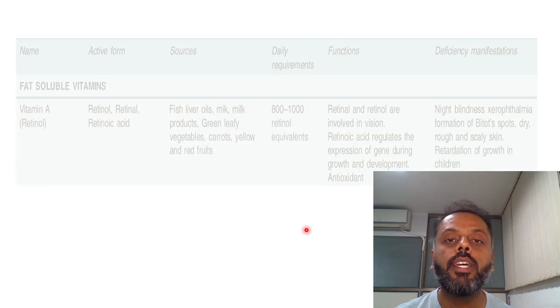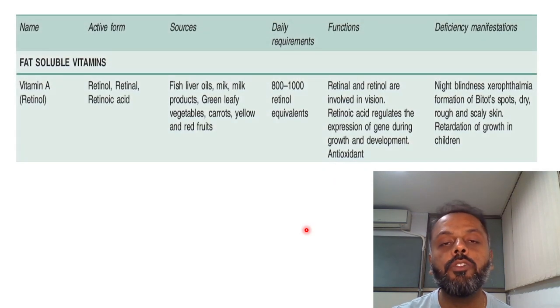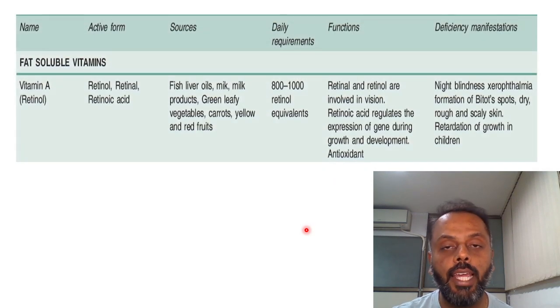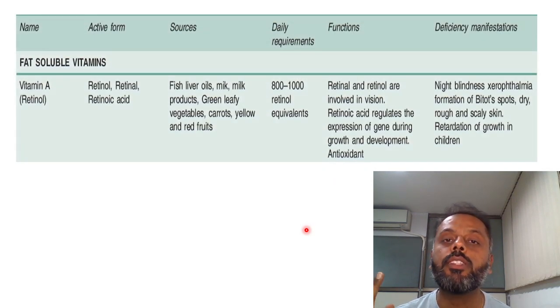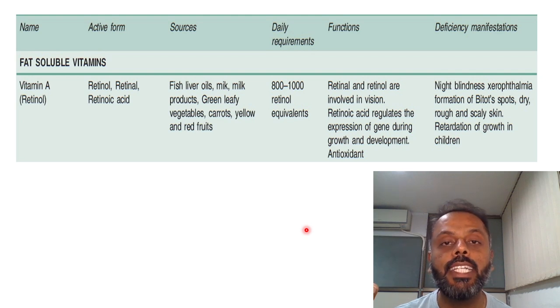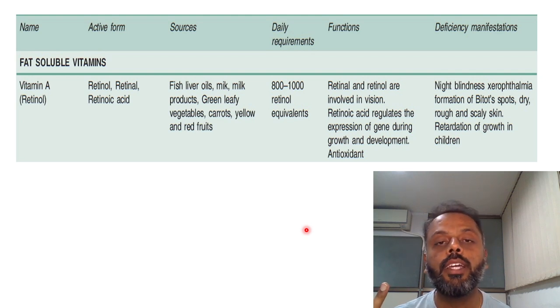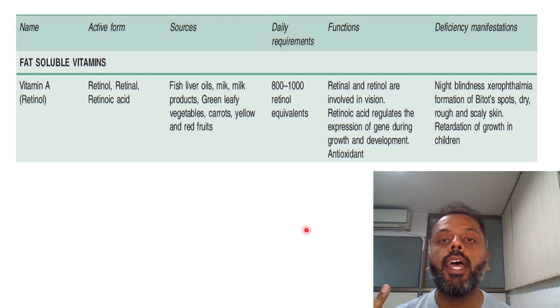First, we will see vitamin A. There are 3 active forms of vitamin A. The first one is retinol, which is the alcohol form; the second one is retinal, which is the aldehyde form; and the third one is retinoic acid, which is the acid form.